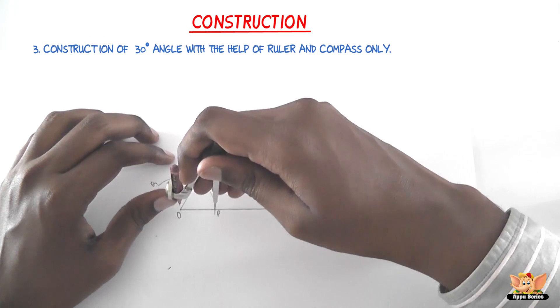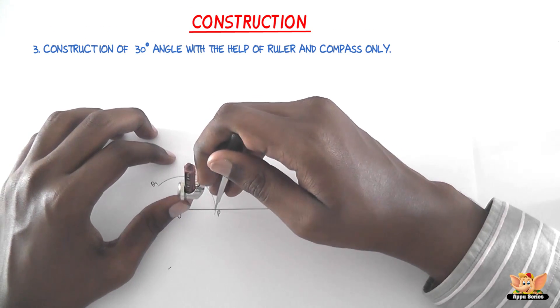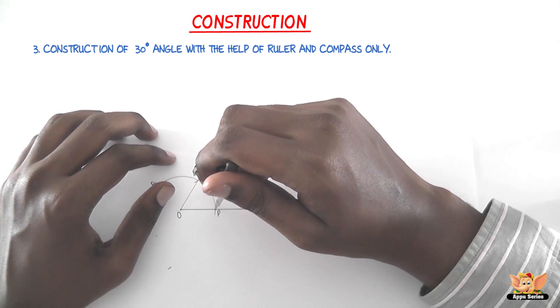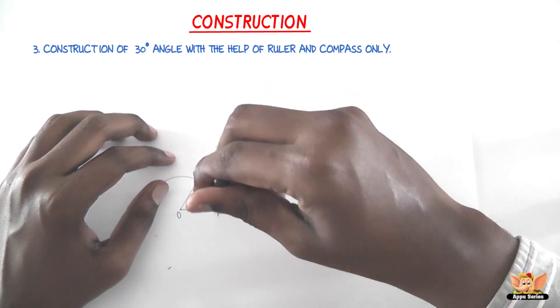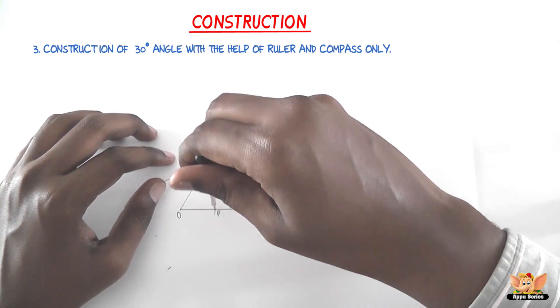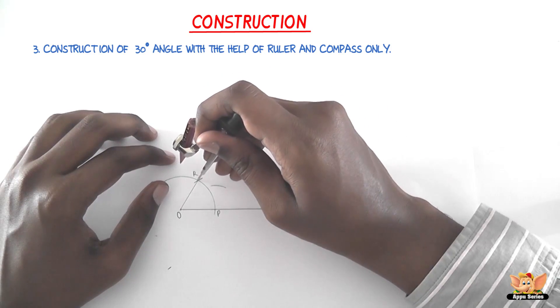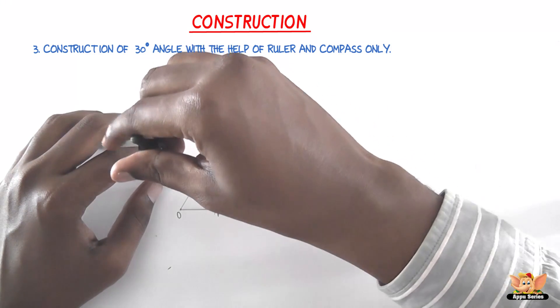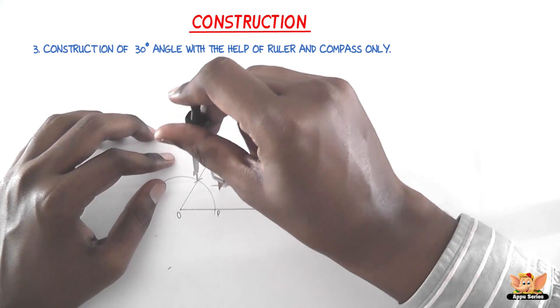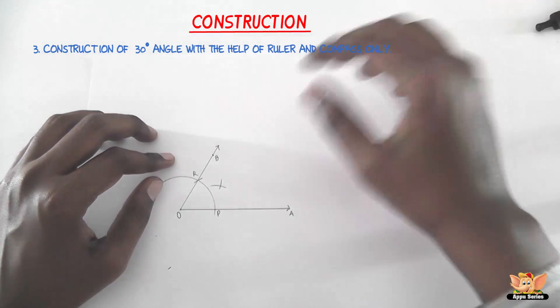With P as center and radius more than half of the arc PR, draw an arc like this. Then with R as center, with the same radius, cut the drawn arc.